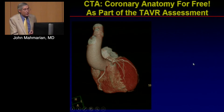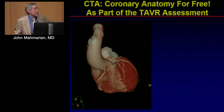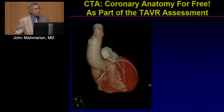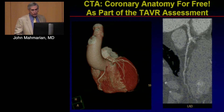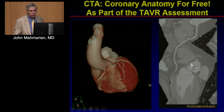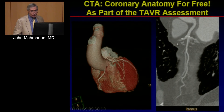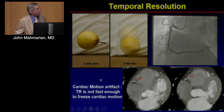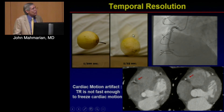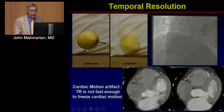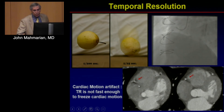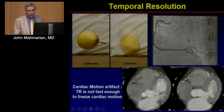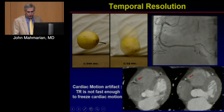Another advantage of CT is that while we perform all the TAVR measurements, we get the coronary arteries for free as part of the same exam. We can obtain excellent images assessing all the main coronary arteries for stenosis. Improved temporal resolution is key — without a fast shutter speed, as with old 64-slice scanners, you get blurred arteries, but with fast acquisition you get very sharp, pristine images.